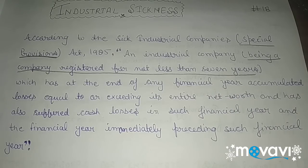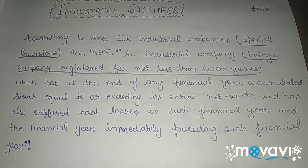And the last point is that the financial year in which the industry suffered these losses should be immediately preceding the current year. For example, a company ABC Limited suffered all these losses in 2014 — so it will be placed in the sick industrial category in 2015. So 2014, the year in which the loss occurred, should be immediately preceding the current year which is 2015. I think this definition is now clear.